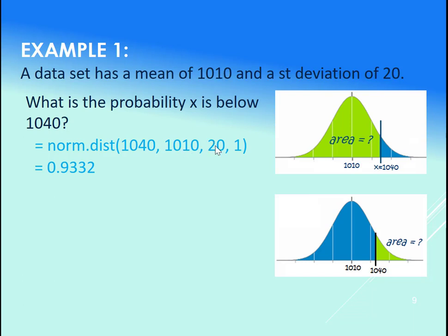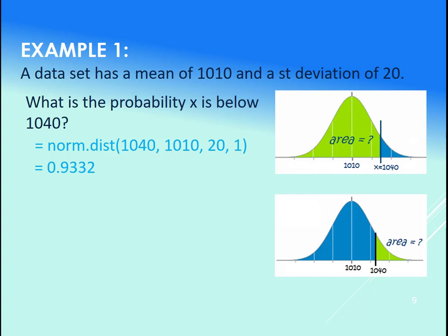And then a one. One means cumulative—it means get the actual all of the probability at that value or below it. So when we plug this into Excel, we get 0.9332 for this norm.dist. We're going to try this in a minute.